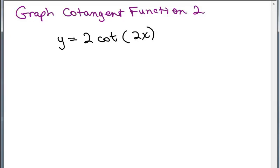So first let's figure out the period. Remember the period for the cotangent is pi, so you have to do pi divided by B.